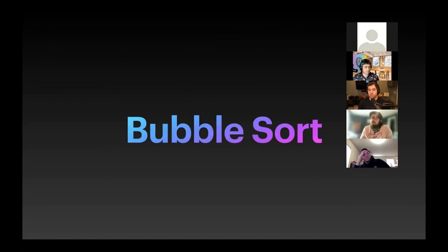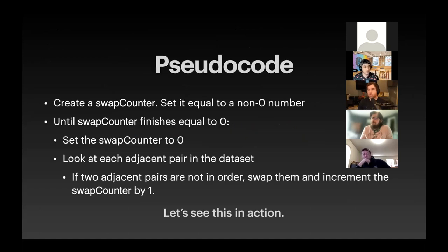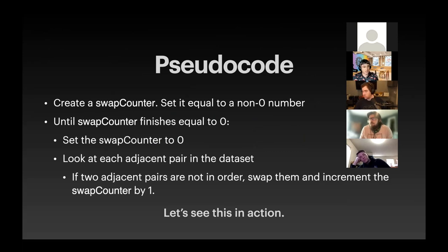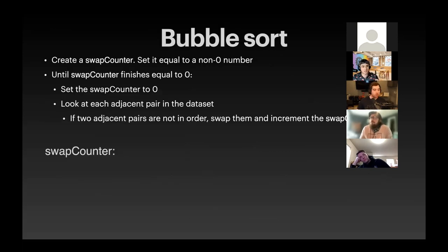Let's talk about bubble sort. The pseudocode is a little bit more complex — these are going to get more and more complex, and when we eventually get to merge sort it's going to get sticky. With bubble sort, we start by creating a swap counter and setting that counter equal to a non-zero number. What we're going to do is: until that swap counter equals zero at the end of a cycle, we are going to look at each adjacent pair in the data set. If the two pairs are not in order, we swap them and increment that swap counter by one.